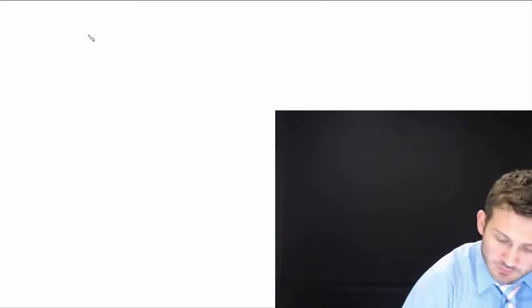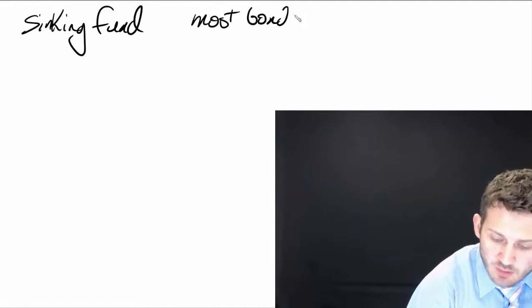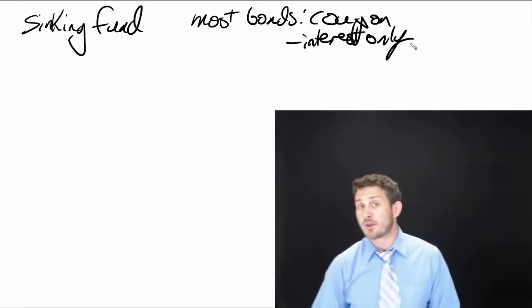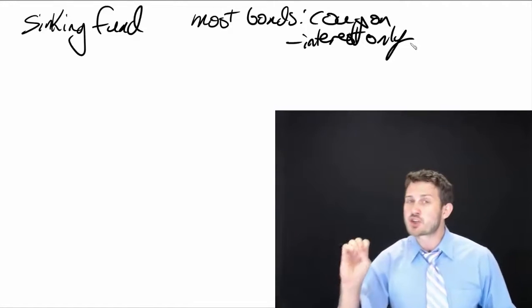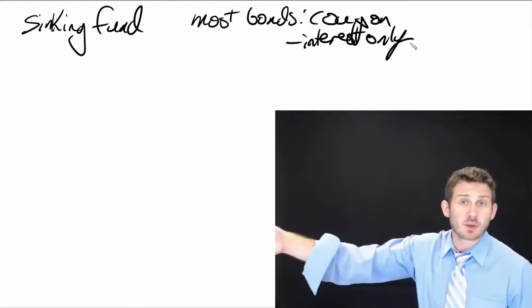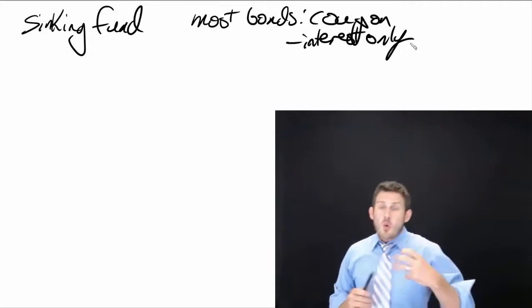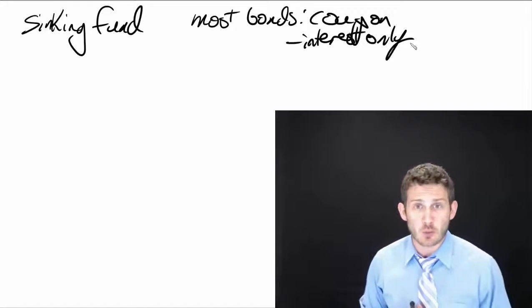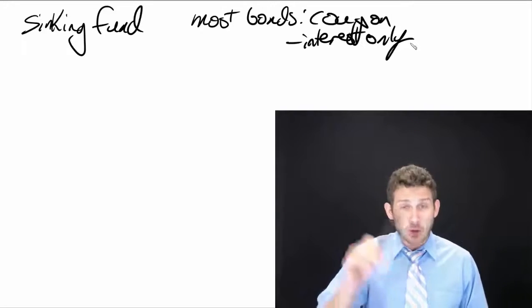Another important feature is the sinking fund. Most bonds are coupon bonds, which are essentially interest-only loans — you're only paying the interest back. The concern is that if a company is only paying interest on, say, a $100 million bond issue, they need to have the funds available at maturity to pay off the principal. Think of it personally: if you take out an interest-only mortgage, your principal never comes down, and when the full balance is due in ten years you probably won't have it just sitting around.